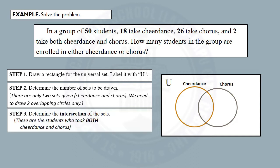Step 3: Determine the intersection of the sets. These are the students who took both cheer dance and chorus. In this problem, there are only two students who took both cheer dance and chorus, so their intersection is 2.